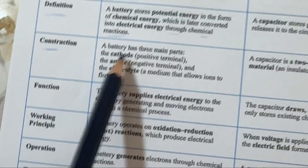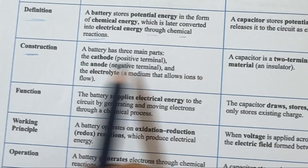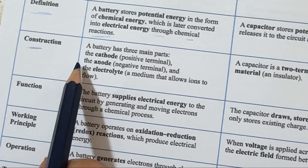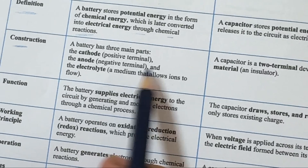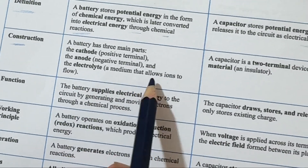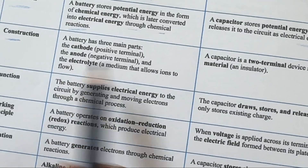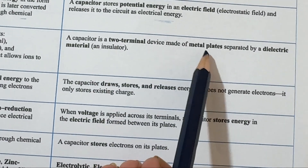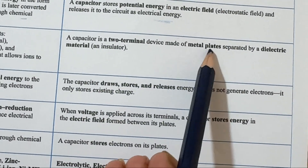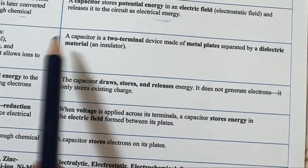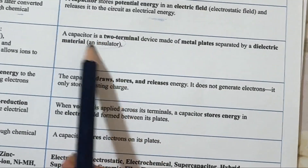Construction: a battery has three main parts — the cathode (positive terminal), the anode (negative terminal), and the electrolyte, which is the medium that allows ions to flow. A capacitor is a two-terminal device made of metal plates separated by an insulating dielectric material.